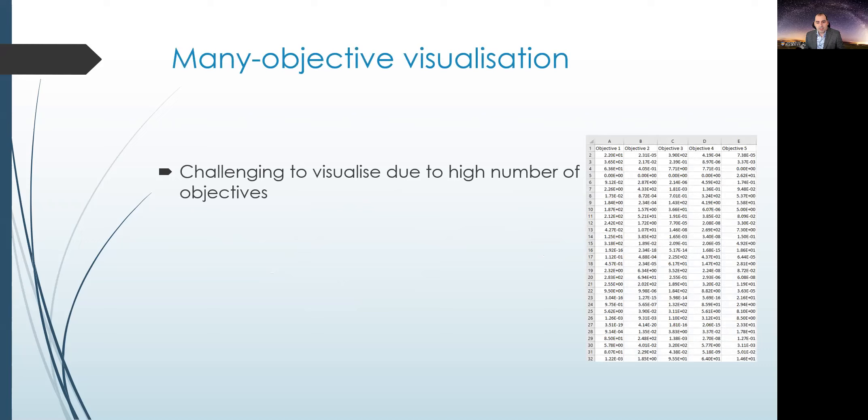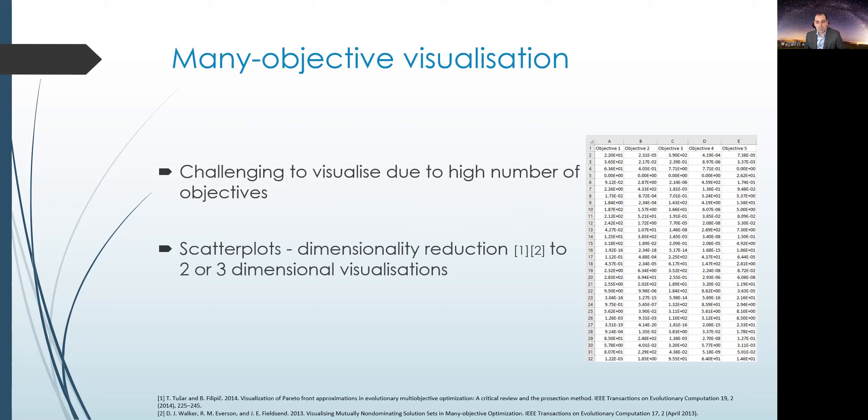An effective many objective visualization is quite difficult to achieve due to the high number of objectives and solutions. Typically, this problem is solved through dimensionality reduction, employing approaches like principal component analysis or other methods, basically reducing the problem to two or three dimensions displayed either as scatterplots or other techniques used for visualization.